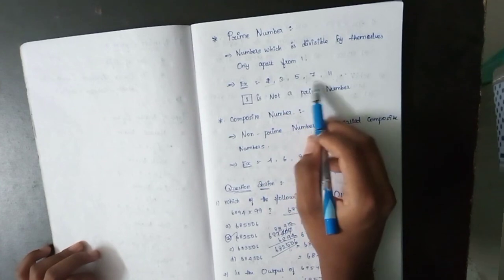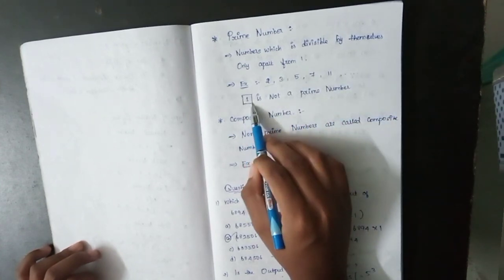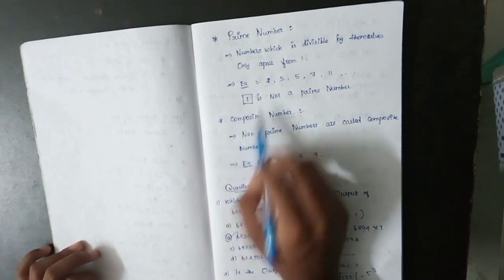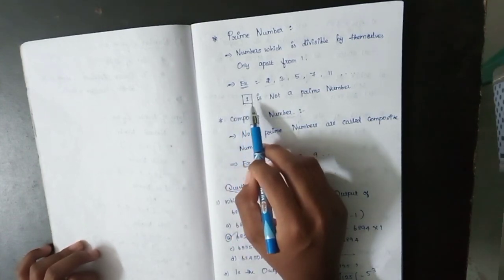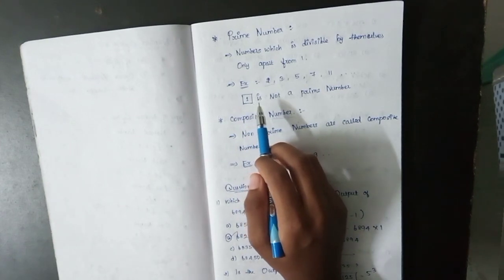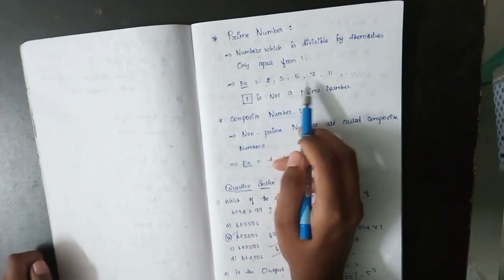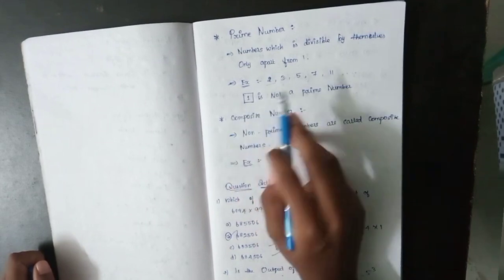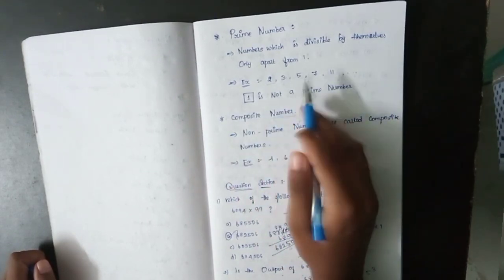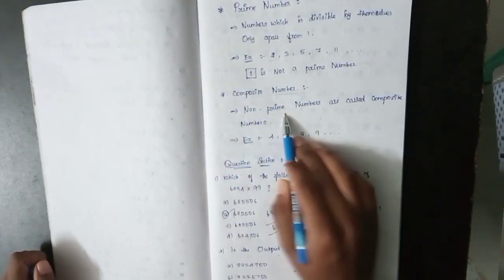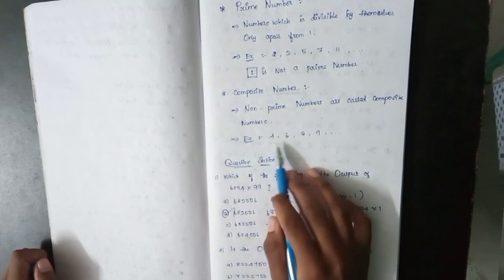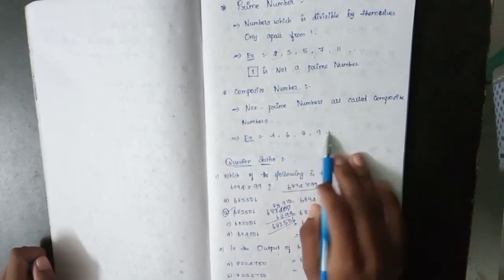Note that 1 is not a prime number. Composite numbers are non-prime numbers. So numbers like 4, 6, 8, 9 are composite numbers. In a competitive exam, you might be asked: write the first 5 prime numbers — the answer is 2, 3, 5, 7, 11. Remember that 1 is neither prime nor composite.